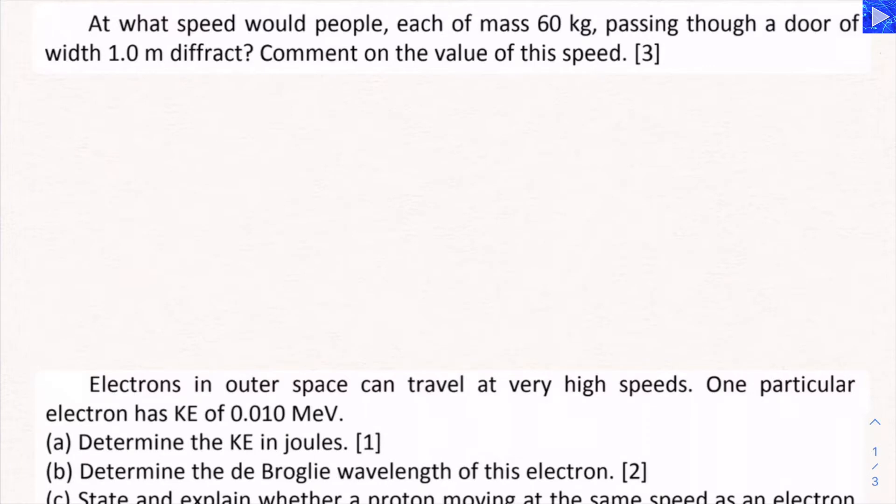Okay, so we're going to be treating the people as a particle that will have an associated de Broglie wavelength, and we're going to see how fast they need to be moving to diffract through this door of one meter.